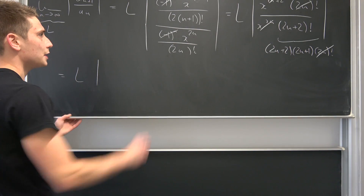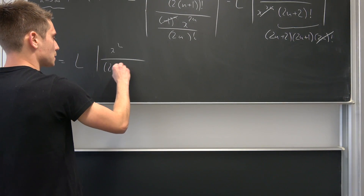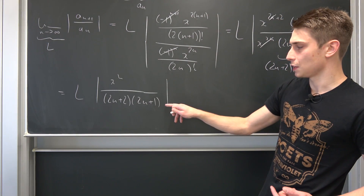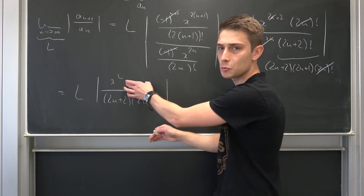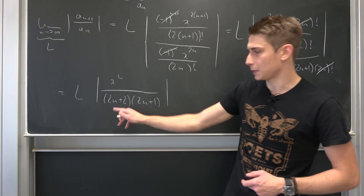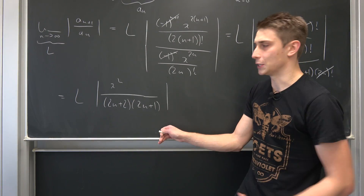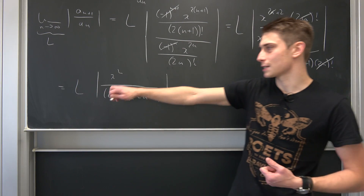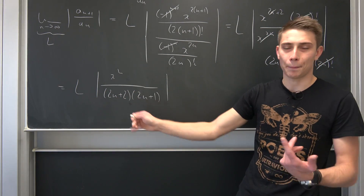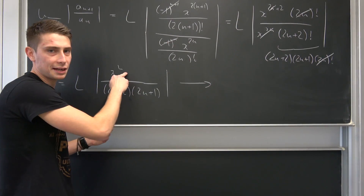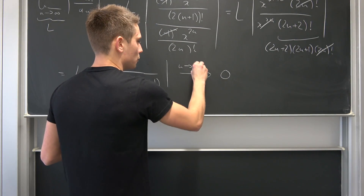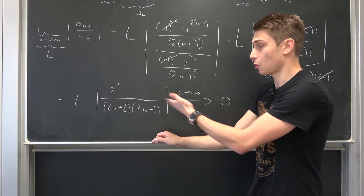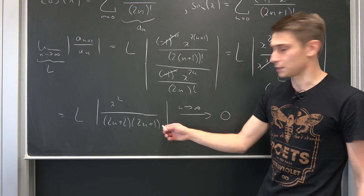We are going to take the limit of the absolute value of x squared over (2n+2)(2n+1) as n approaches infinity. We can distribute the absolute value: the numerator stays as |x²|, and the denominator consists of natural numbers so its absolute value is itself. Taking the limit as n approaches infinity, this is a finite number over infinity, which goes to zero. So it doesn't matter which value of x we plug in — this thing goes to zero, meaning our radius of convergence is infinite.